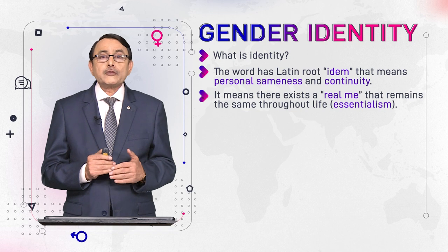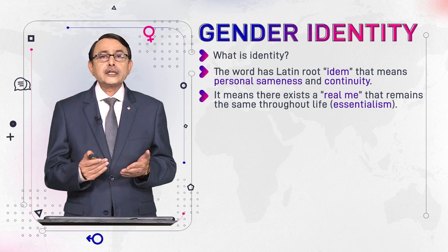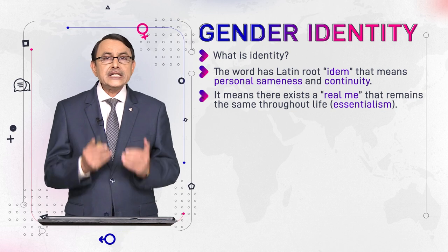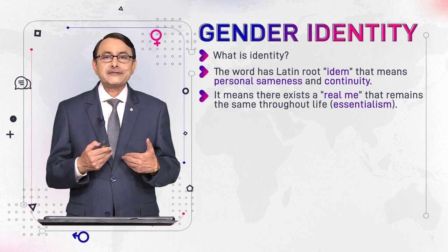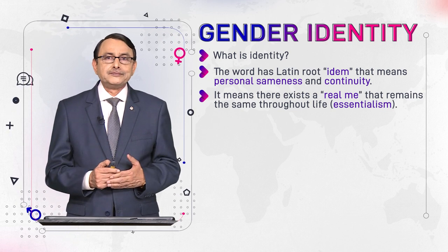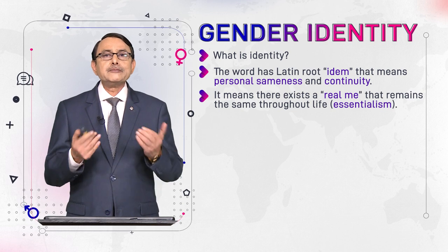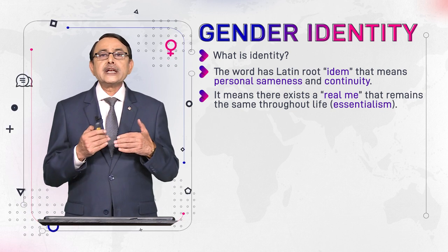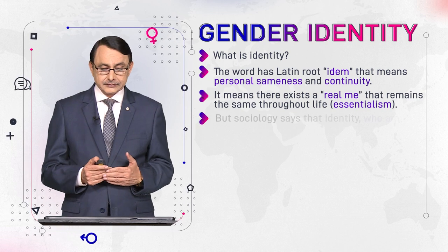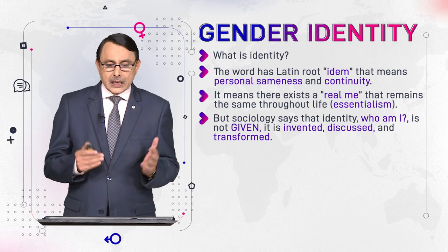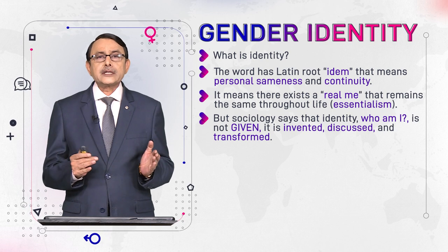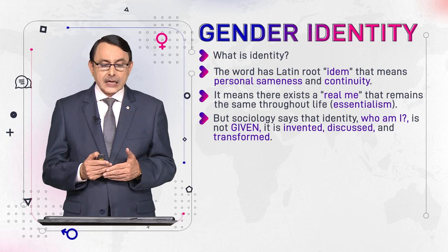This constant sameness of our person, our self, is known as identity. It means there exists a real me — something real because it remains constant and exists over a period of time. But sociology says that identity — who am I — is not given.